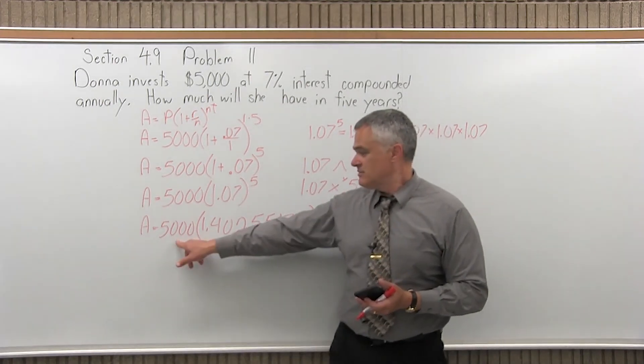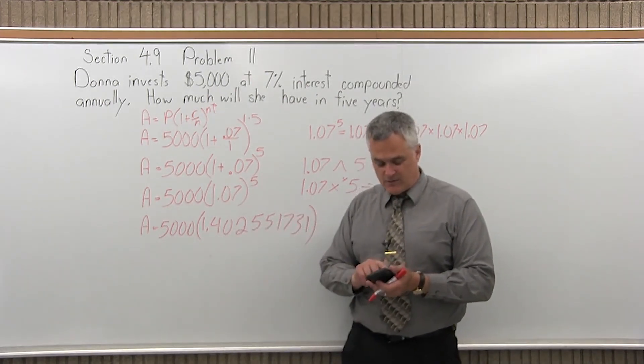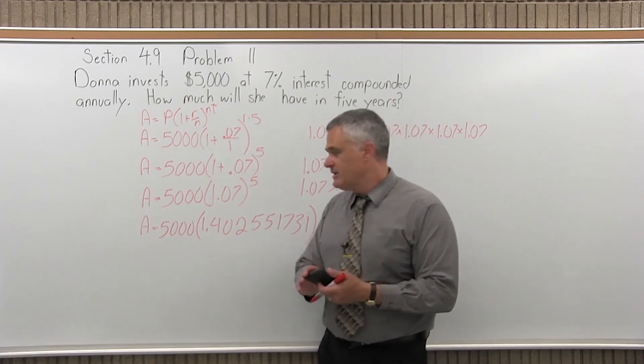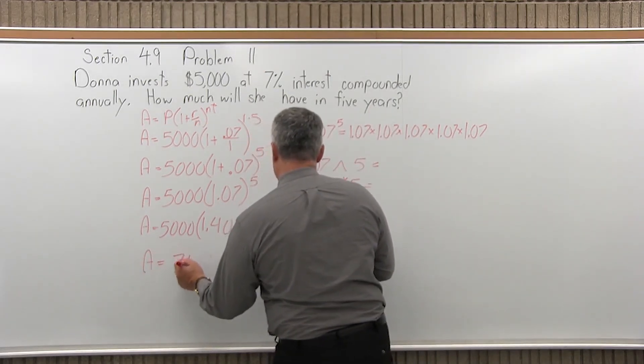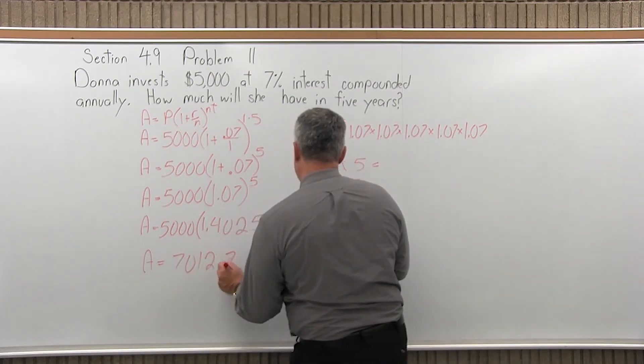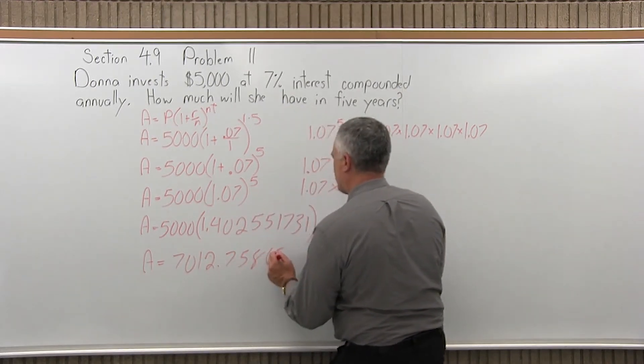Press times the number in front of the parentheses, 5,000, so 5,000 equals, and the calculator tells me that A is 7012.758653.